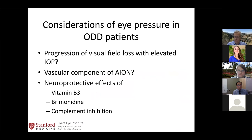In the particular patient I presented earlier, his pressure was elevated and there was definitely evidence of drusen on B-scan. I recommended that we treat him with latanoprost to lower his eye pressure, and we will follow to see whether the visual field changes are going to progress.